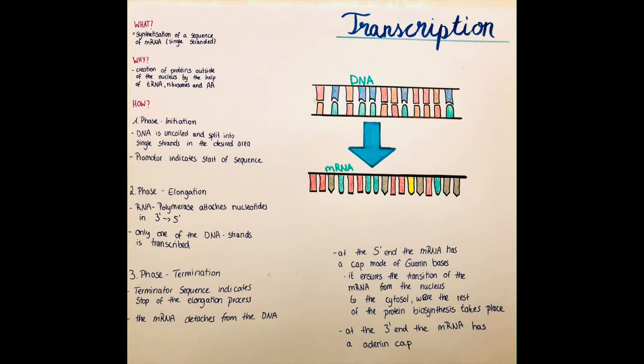Then the now single-stranded synthesized mRNA detaches from the DNA and the DNA is closed by the hydrogen bonds again and recoiled so that it goes back to its initial form. And the mRNA leaves the nucleus and goes to the cytosol where the ribosomes are located, and there the translation can take place, where from the mRNA by the help of amino acids the proteins are synthesized.